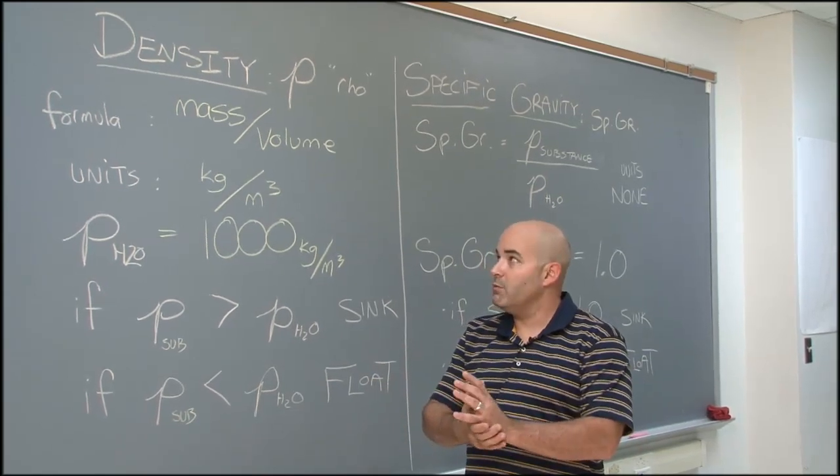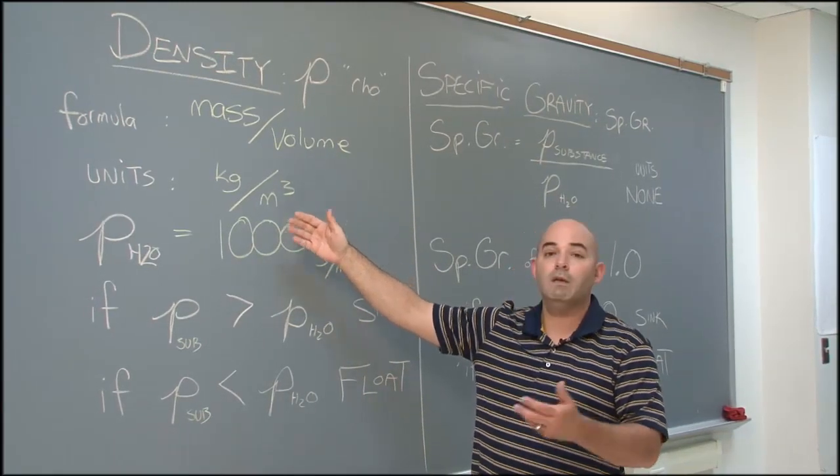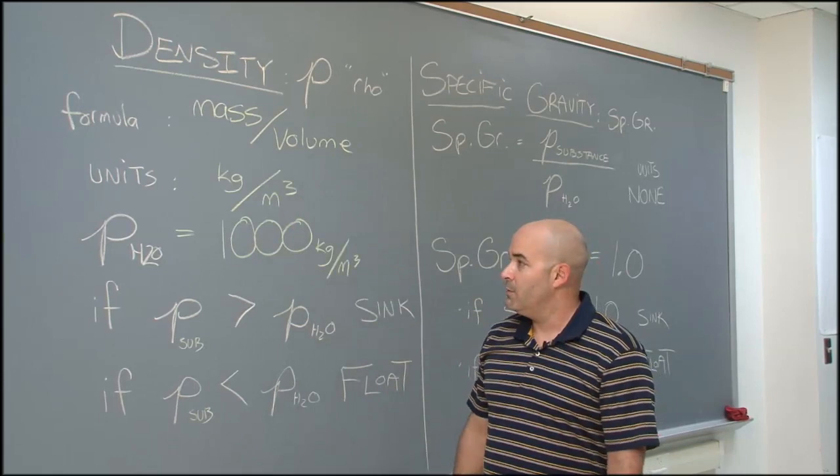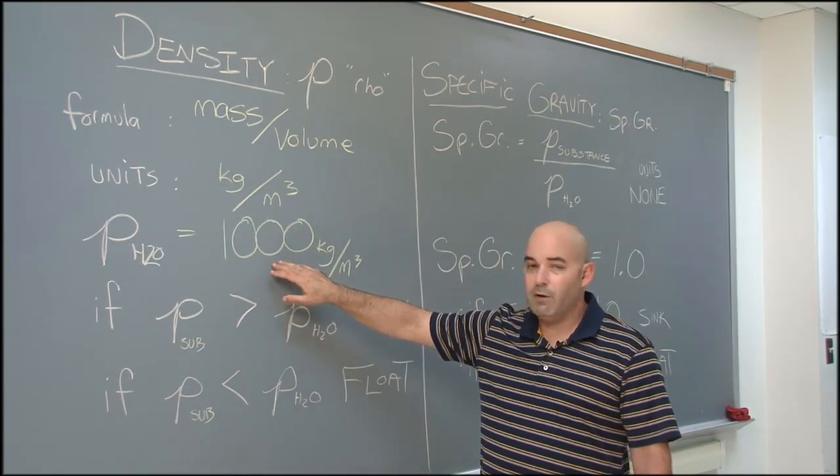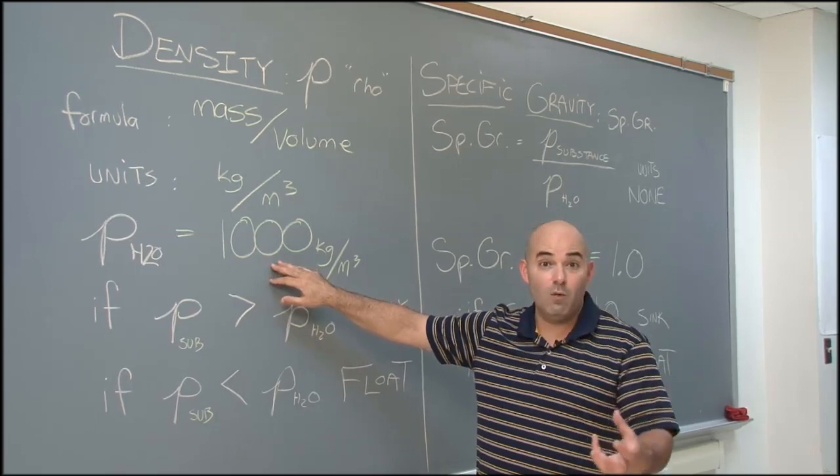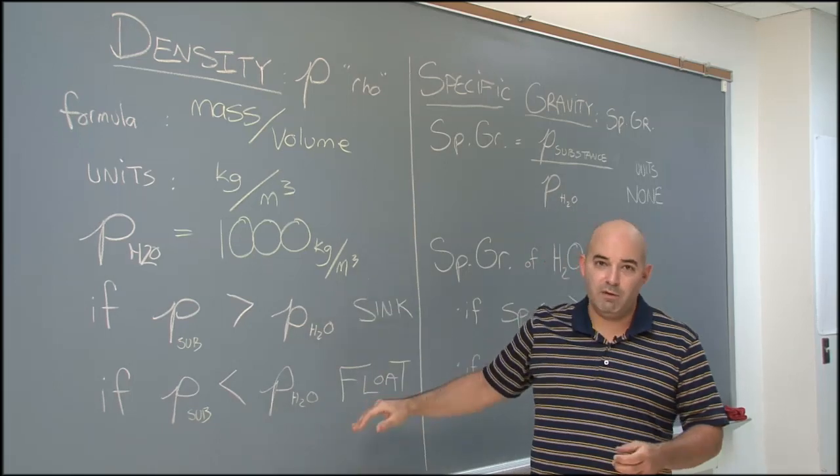The units, no big surprise, mass is measured in kilograms, volume is measured in meters cubed, so the units, kilograms per meter cubed. We need to memorize this one. A lot of things compare the density of this to the density of water, so it's good to know. Density of water, 1,000 kilograms per meter cubed.